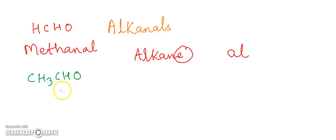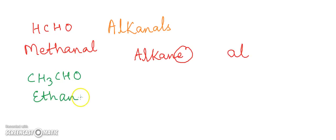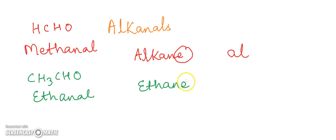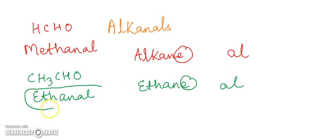For example, CH3CHO has the common name acetaldehyde. In the IUPAC name, it is called ethanal — derived from ethane by replacing the terminal '-e' with '-al', giving us ethanal.